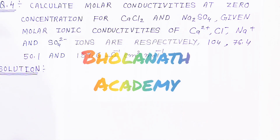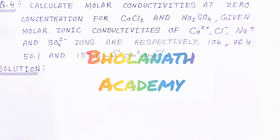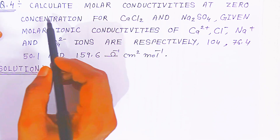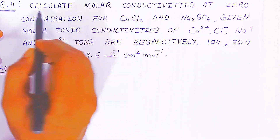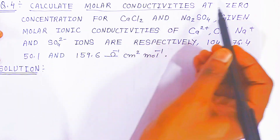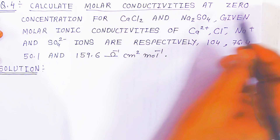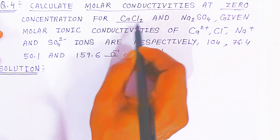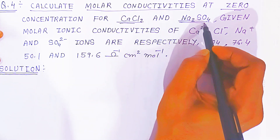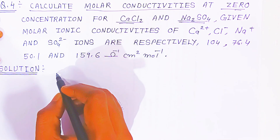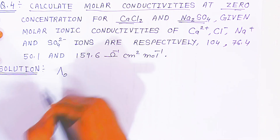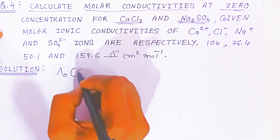Hello students, once again welcome to Bholanath Academy. In this video we are going to see question number 4. We have to calculate molar conductivities at zero concentration of calcium chloride and sodium sulfate. So we have to calculate the molar conductivity at zero concentration of calcium chloride.